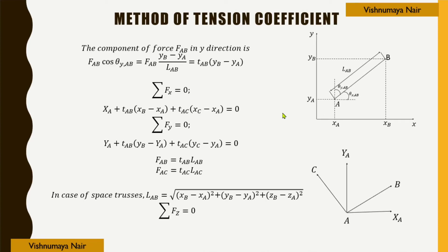Similarly, the y component of force fab equals fab·cos(θy,ab). Since cos(θy,ab) = (yb−ya)/lab, this becomes fab·(yb−ya)/lab. Since tab = fab/lab, the y component equals tab·(yb−ya). So the x component of fab is tab·(xb−xa) and the y component is tab·(yb−ya).